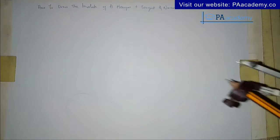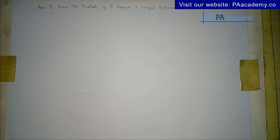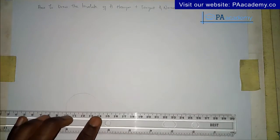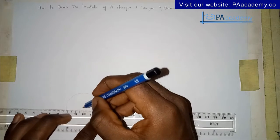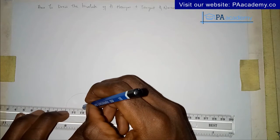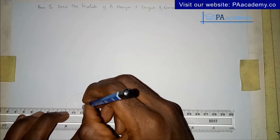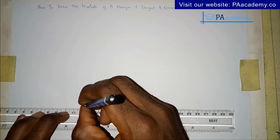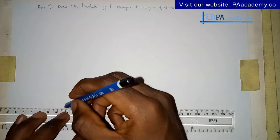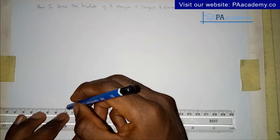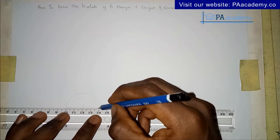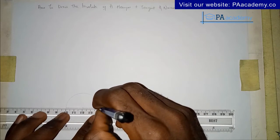Since I'm using the circle method, I'm going to make my circle faint. If you check our playlist on technical drawing, there are a lot of videos there that show different methods of drawing a hexagon.